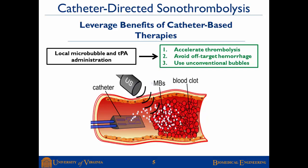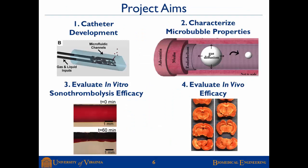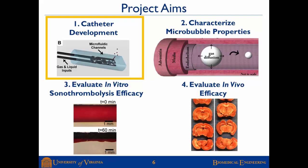Our concept is to insert a catheter directly into the occluded blood vessel, introduce microbubbles and/or tissue plasminogen activator, and apply ultrasound either from the catheter itself or transcutaneously. There were four key aims in this project: develop a catheter, characterize the microbubble properties, evaluate in vitro sonothrombolysis efficacy, and evaluate in vivo efficacy using a rat stroke model.